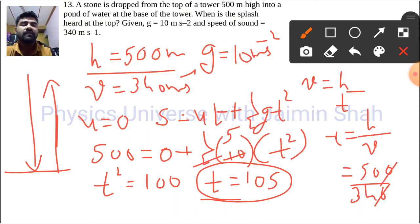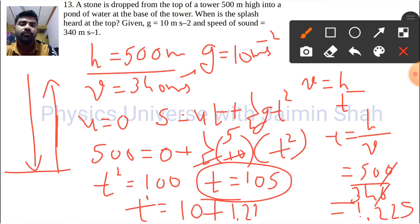Zeros cancel out, so 50/34 ≈ 1.22 seconds. Total time after dropping that stone will be t' = 10 + 1.22 = 11.22 seconds.